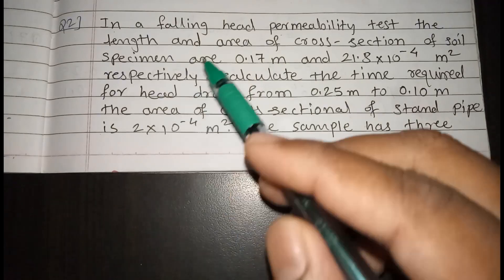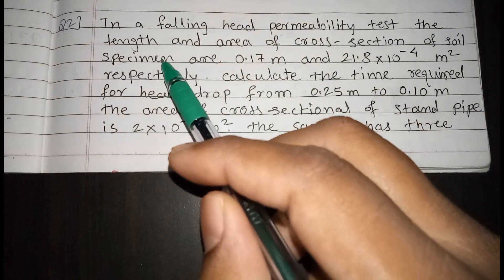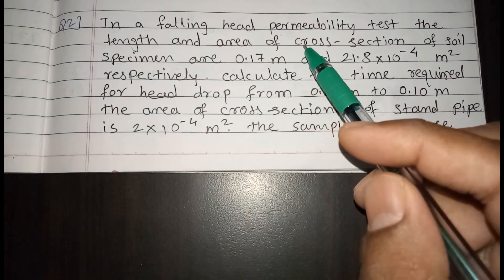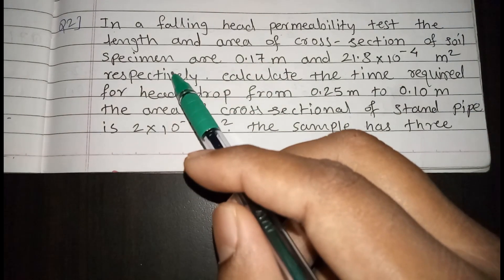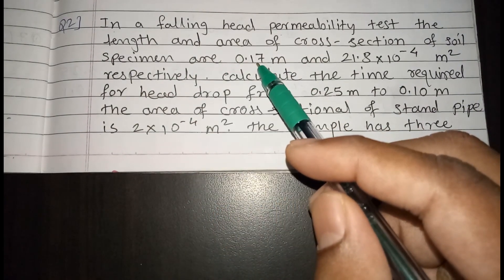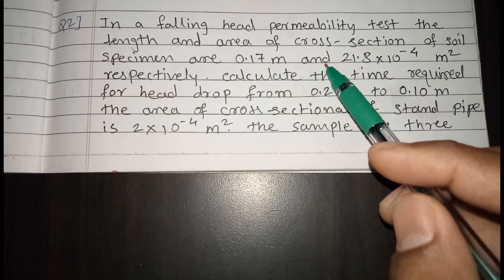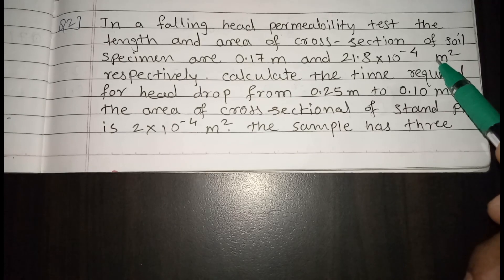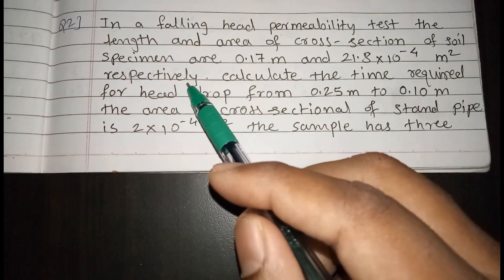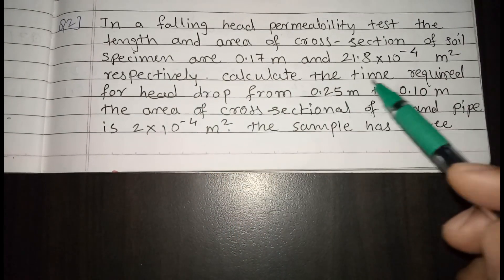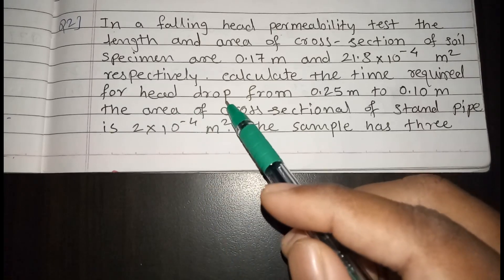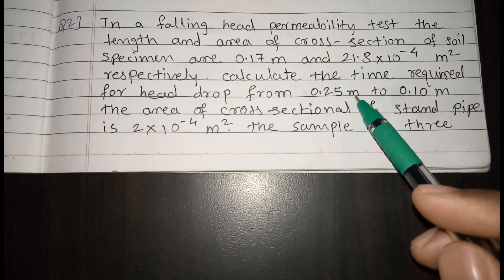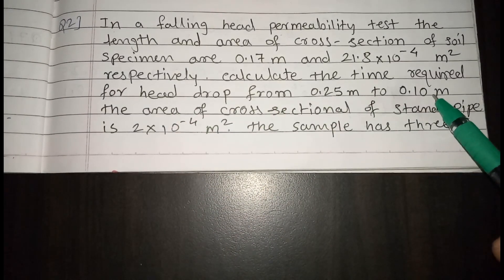In a falling head permeability test, the length and area of cross section of soil specimen are 0.17 meter and 21.8 into 10 raise to 4 meter square respectively. Calculate the time required for head drop from 0.25 meter to 0.10 meter.